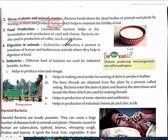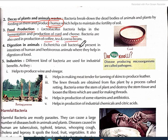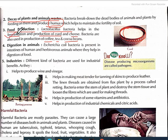Third: food production. Lactobacillus bacteria help in the fermentation and production of curd and cheese. Bacteria are also used in the production of coffee, tea, and cocoa beans. We add lactobacillus bacteria to milk at night, and after some time the bacteria multiply and convert the milk into curd by the process of fermentation.